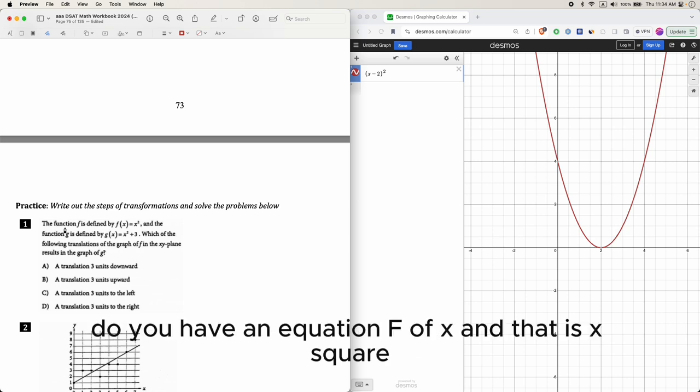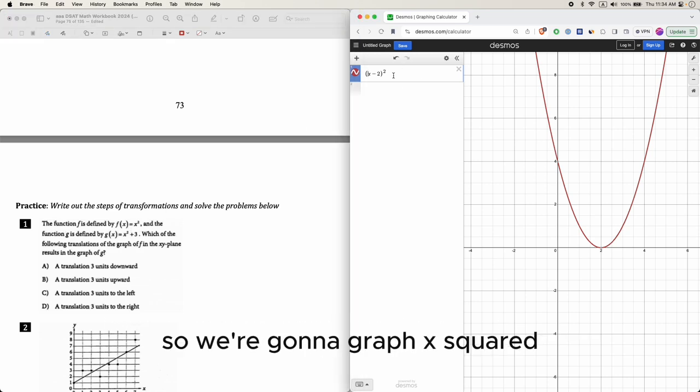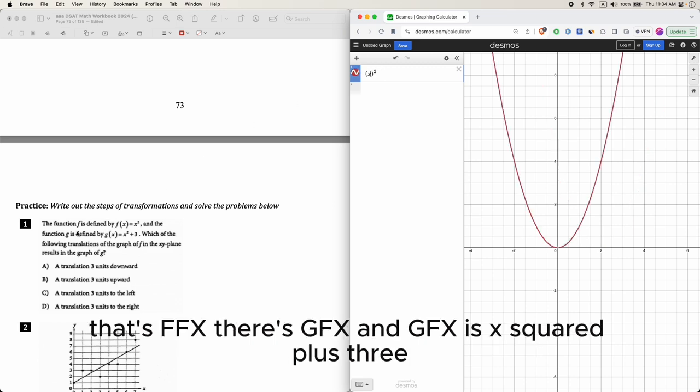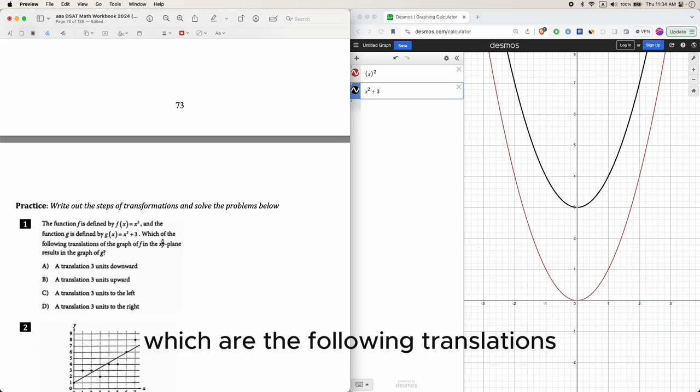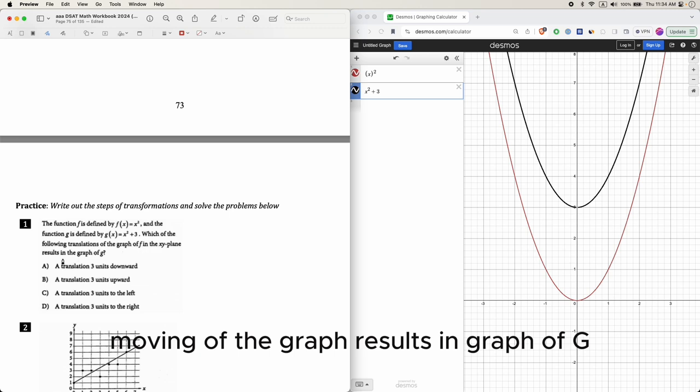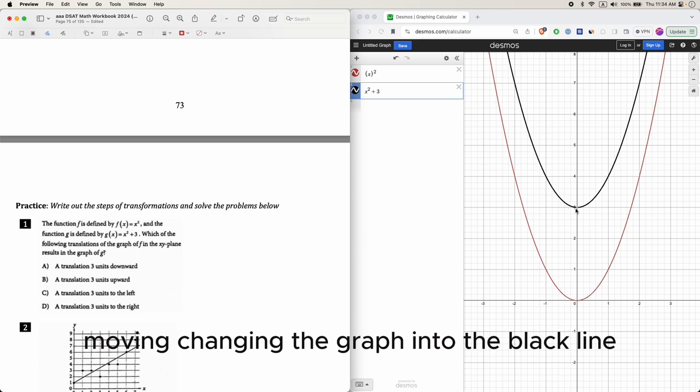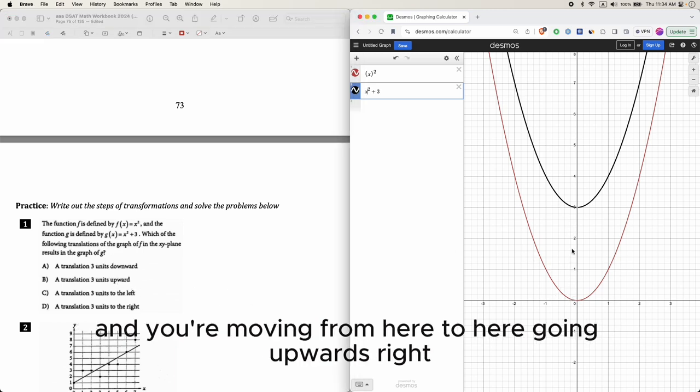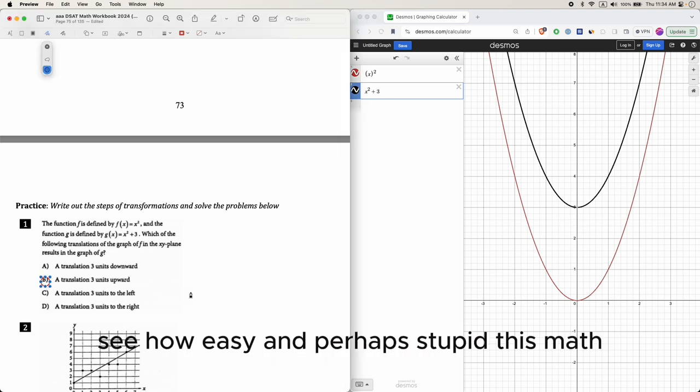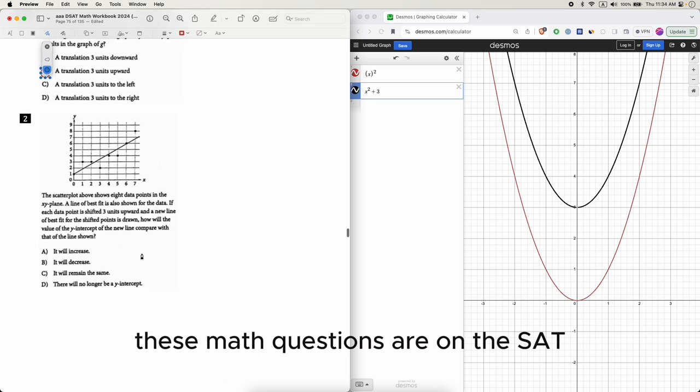Here's an example. You have an equation, f of x, and that is x squared. So we're going to graph x squared. That's f of x. There's g of x, and g of x is x squared plus 3. Two graphs here. Which of the following translations, moving of the graph, results in graph of g? So you're starting with f, starting with the red one, you're moving, changing the graph into the black line. How do you do it? By just looking at it, you're moving three units upwards. And you're moving from here to here, going upwards, right? So the answer is going upwards. The answer is b. See how easy and perhaps stupid these math questions are on the SAT?